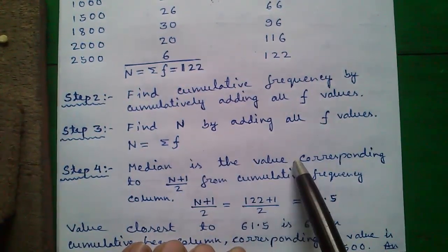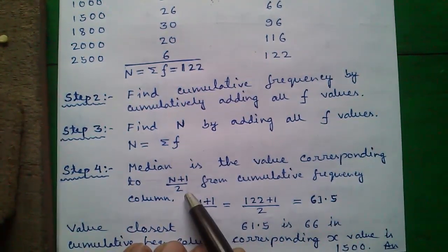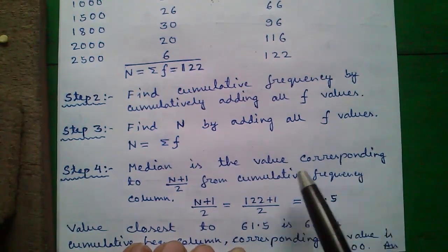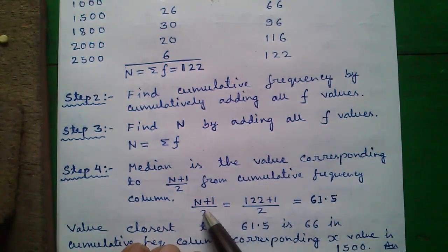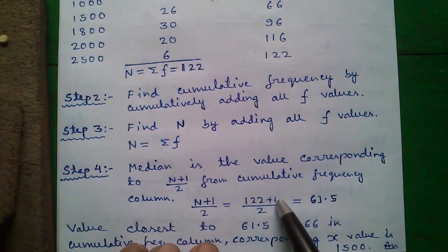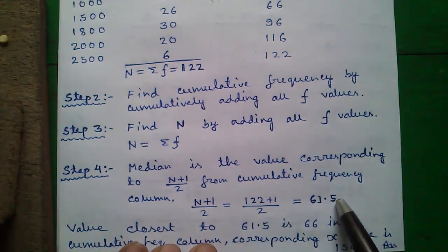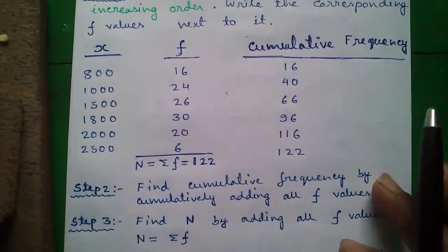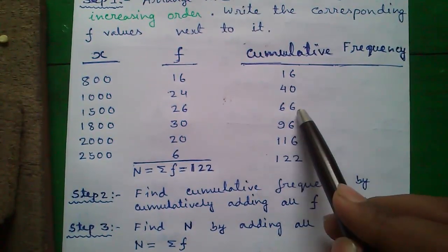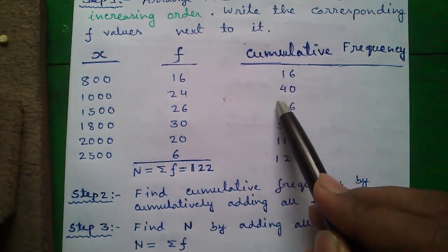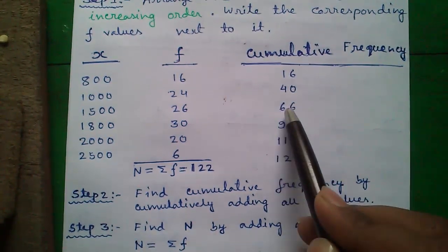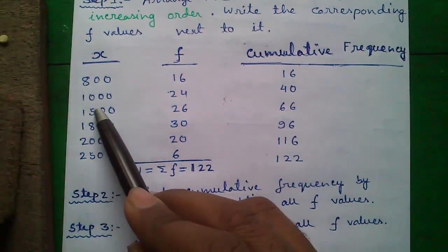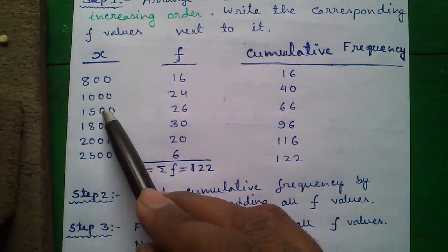Step 4. Median is the value corresponding to N plus 1 by 2 from cumulative frequency column. Find out N plus 1 by 2 which is 122 plus 1 by 2 equals to 61.5. And value closest to 61.5 you have to find out in cumulative frequency column. So value closest to 61.5 in cumulative frequency column is 66. Corresponding X value is 1500 which is our answer.